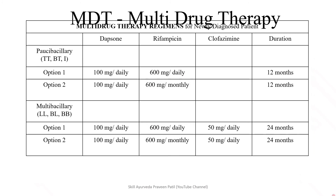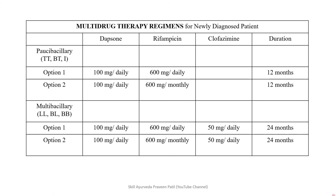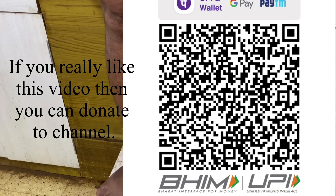This is the MDT regimen. Paucibacillary includes tuberculoid and borderline tuberculoid Hansen's disease, treated with Dapsone and rifampicin. Multibacillary includes lepromatous, borderline lepromatous, and borderline-borderline Hansen's disease, treated with the 3-drug regimen. This concludes the brief overview of Hansen's disease.